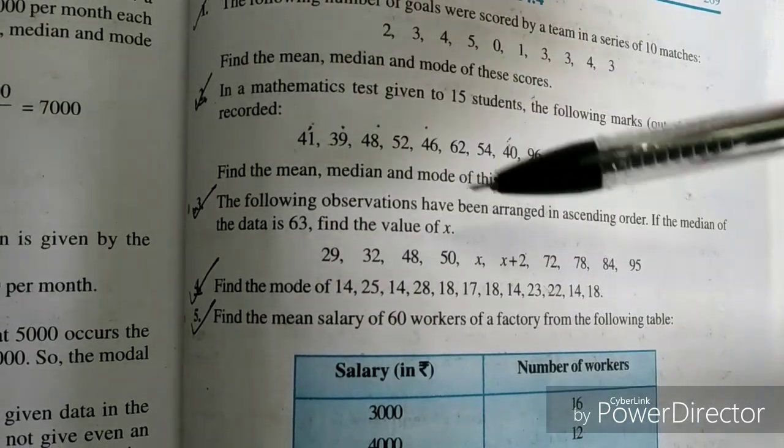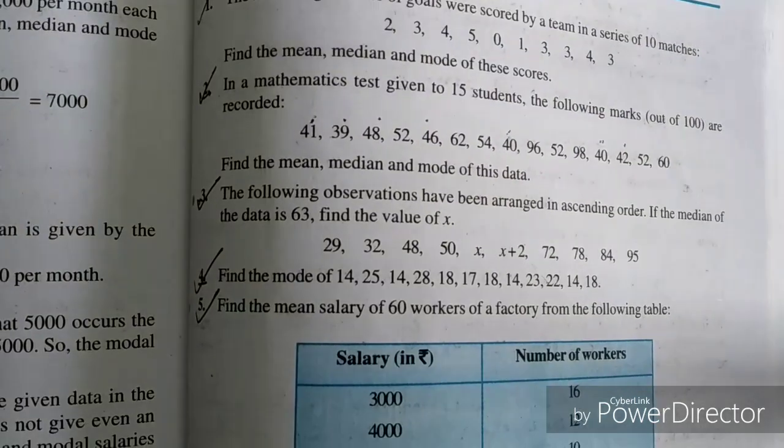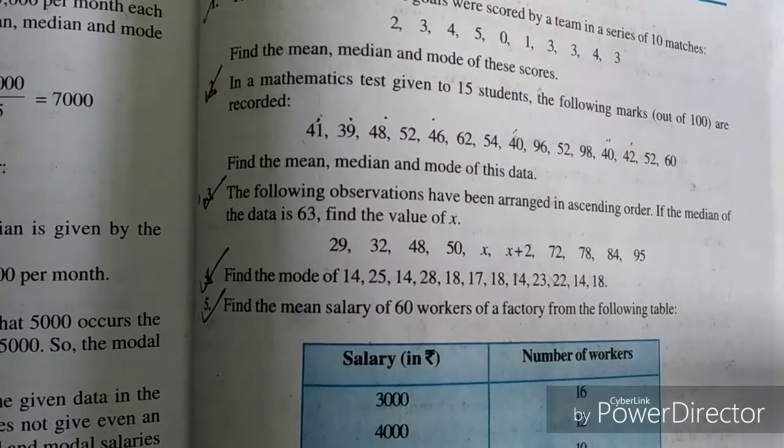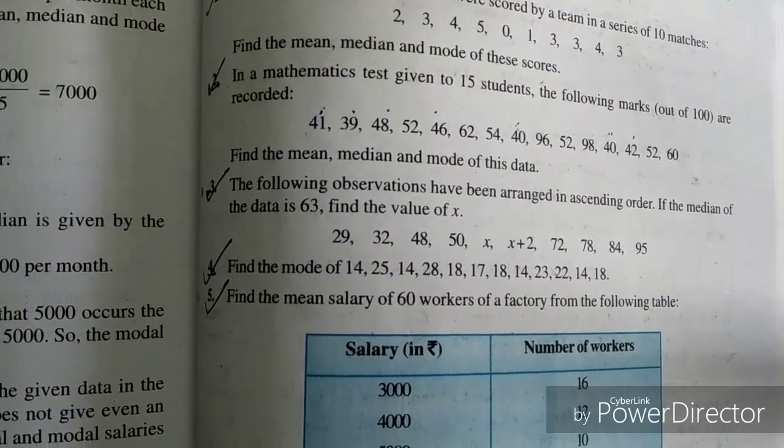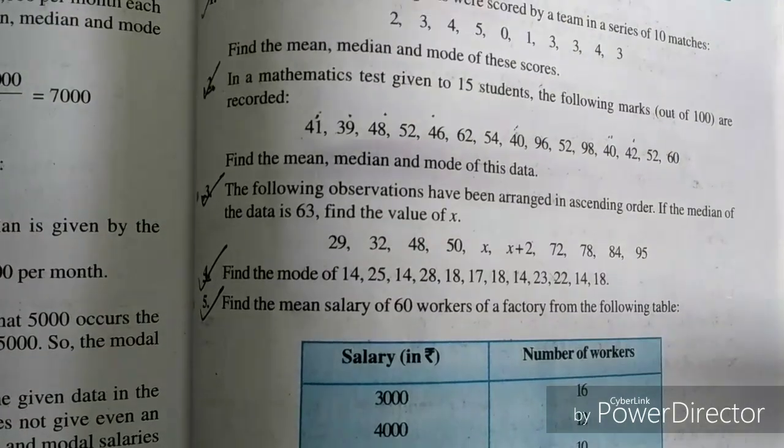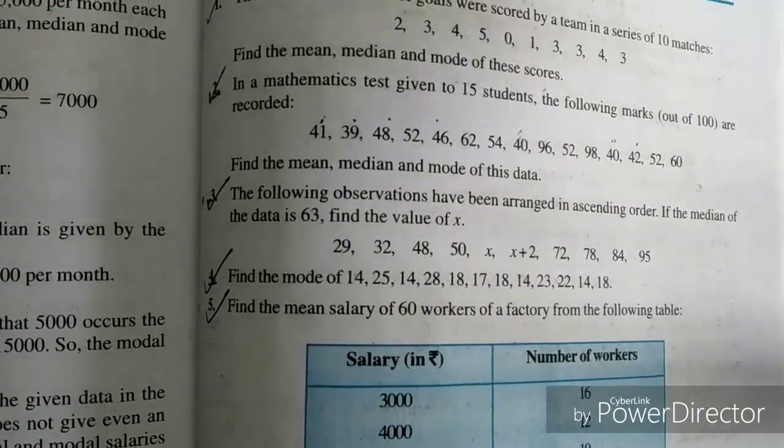You must do the third question because you have to find the value of X. The method is the same. You have to apply the formula to find X. You have to find the median, which is 63. So do this question.